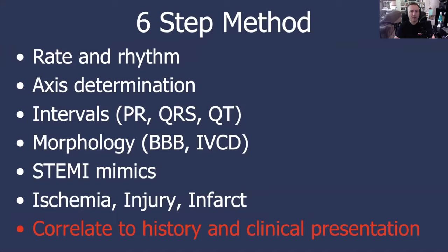So this is the six-step method. It starts with rate and rhythm — we're always going to start there with a 12-lead ECG. Then we're going to look at axis determination. Now, this is often the time in a class that someone's eyes glaze over and they start to experience their own anxiety. Axis determination just brings that out in folks.